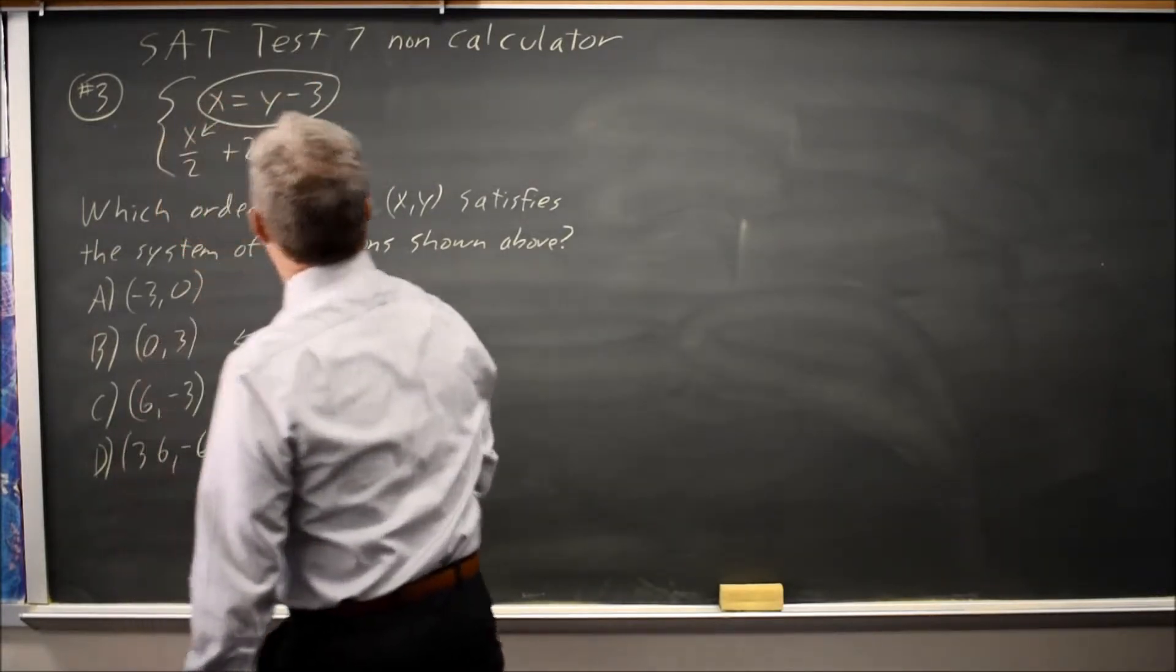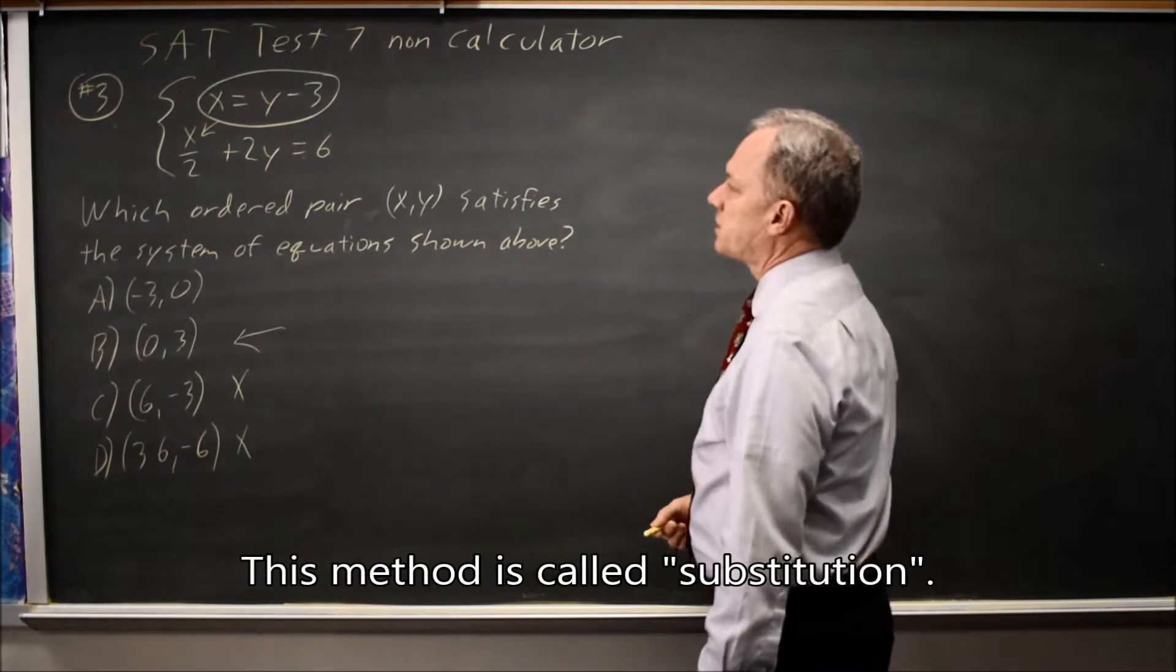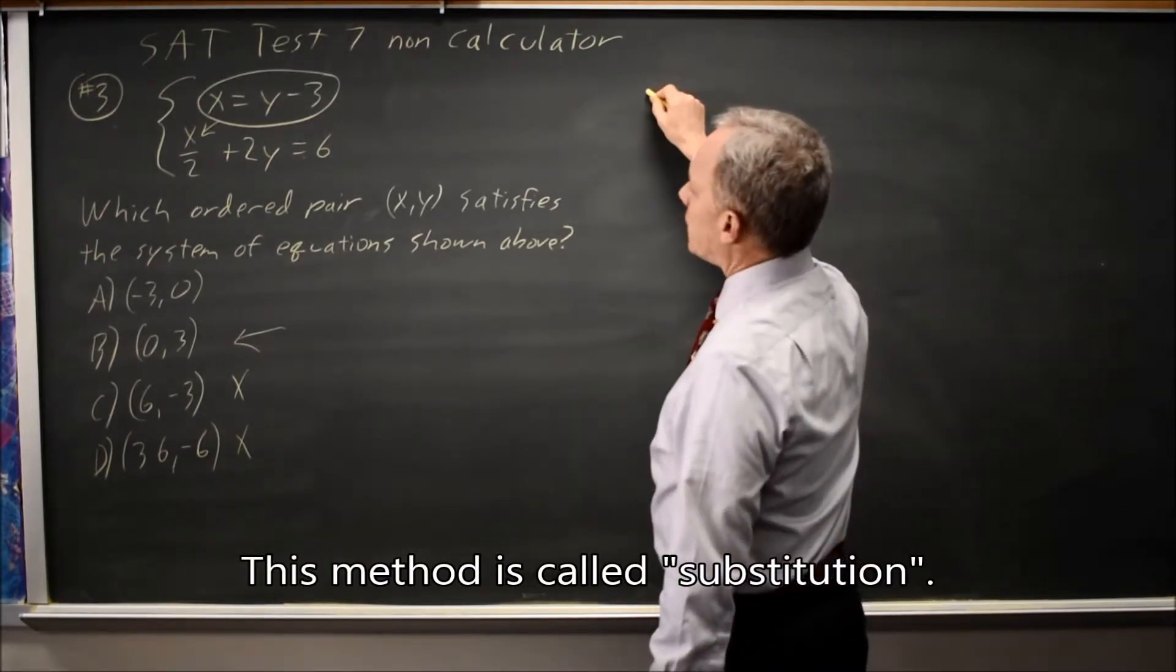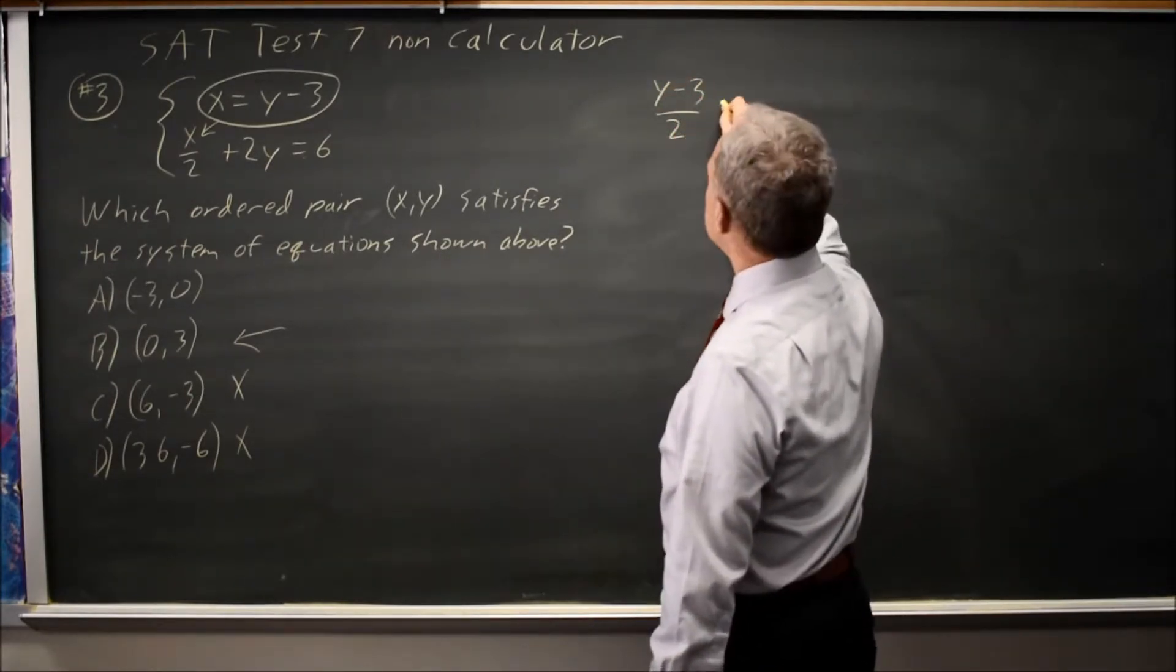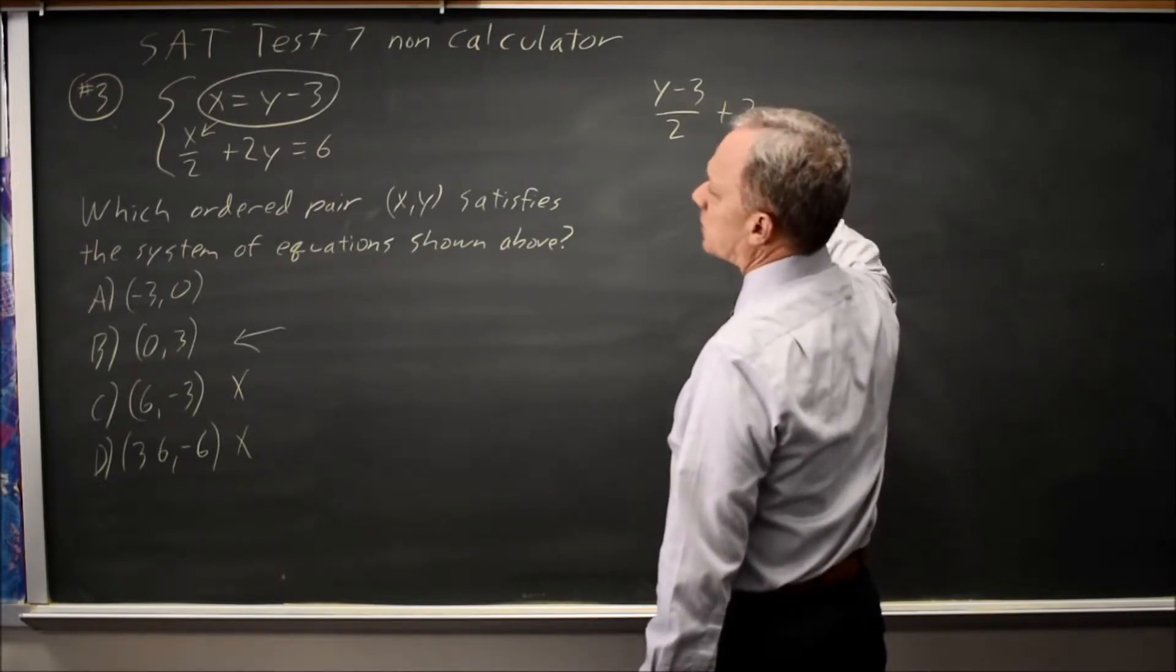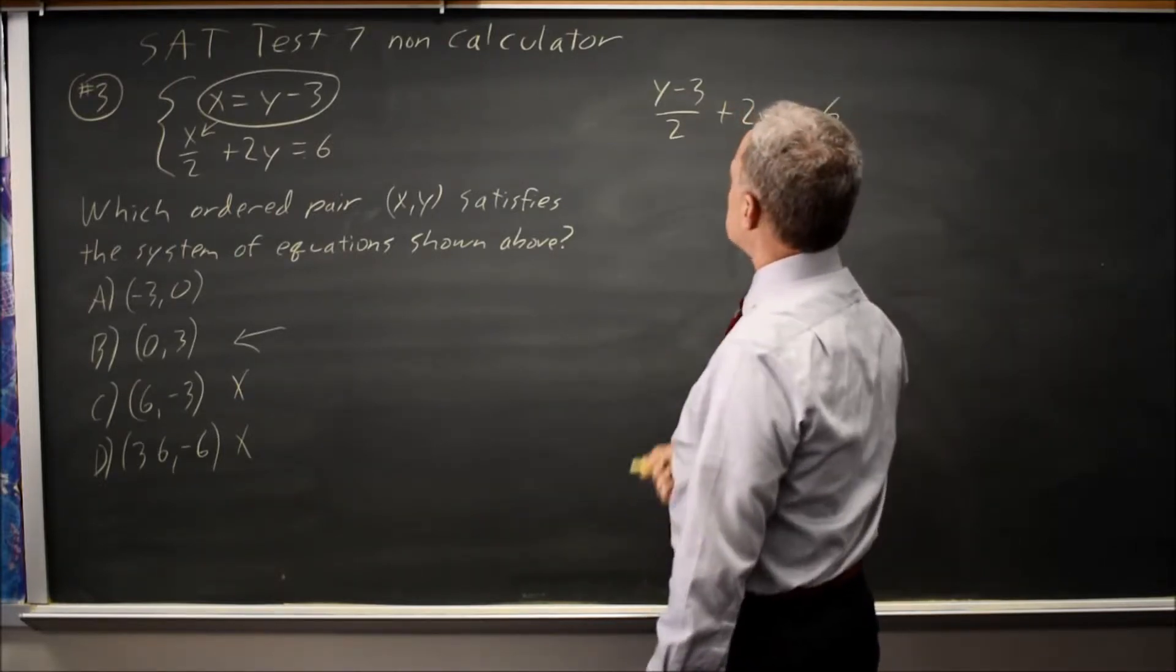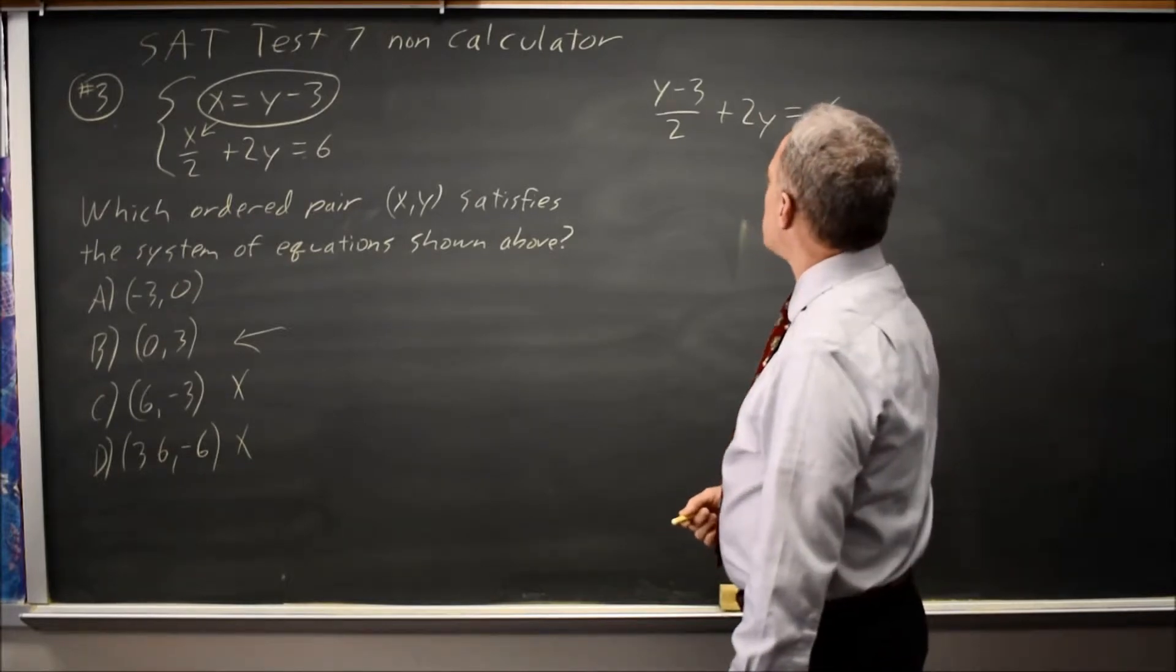If I substitute in for x in that second equation, I have x over 2 is (y minus 3) over 2 plus 2y equals 6, and I want to solve for y.